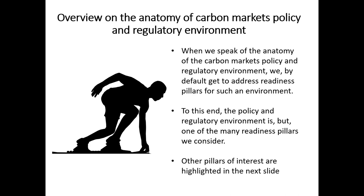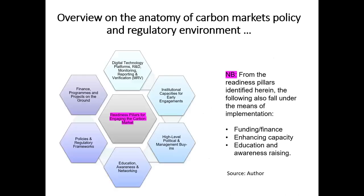I'll recap the readiness pillars introduced in Module 1, with emphasis on the means of implementation. The policy and regulatory environment is but one of many readiness pillars. Other pillars include: digital technology platform, research and development, monitoring, reporting and verification, institutional capacity for early engagement, high-level political and management buy-ins, educational awareness and networking, policies and regulatory frameworks, and finance programs and projects on the ground. From these readiness pillars, the means of implementation also include funding, finance, enhancing capacity, education and awareness raising, and technology.